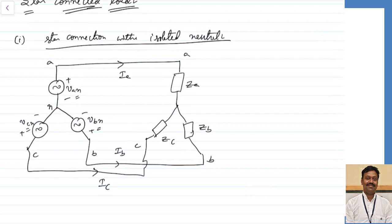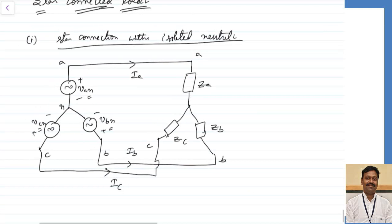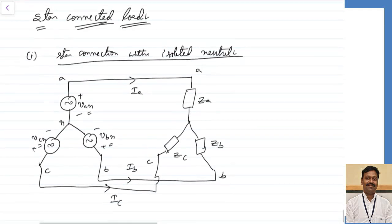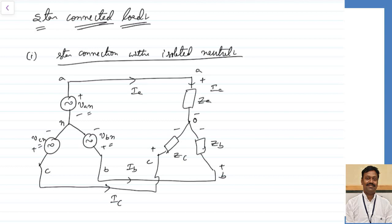Let us assume this load has three loads connected. Let us assume their center point or the neutral point for them is equal to zero — that means the point where the voltage will be equal to zero. The current entering is equal to Ia in the first branch, Ib in the second, and Ic in the third.